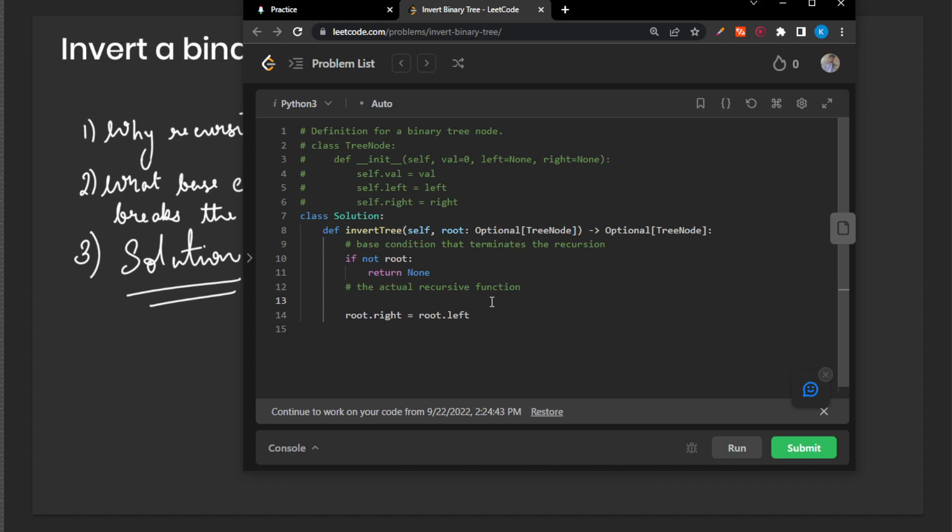So before we do this, let's save the temp right using the root right. And then we change root right to root left. And then we change root left to temp right.